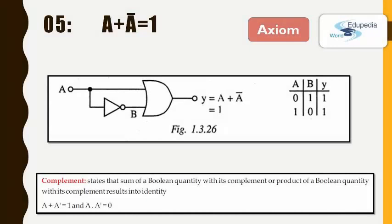A plus A bar equals 1. We call this as complement law. It states that the sum of a boolean quantity with its complement results into identity. To show you the correctness of this law we have drawn the logic circuit and the truth table. So in this logic circuit it has only one input A and with the NOT gate we are outputting the B which means A bar and both A and A bar is inputted into an OR gate and it results A plus A bar. In the truth table when A becomes 0, B becomes 1; when A becomes 1, B becomes 0, and always the output is 1. With that we can show you the correctness of this law.